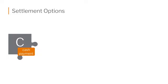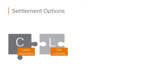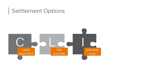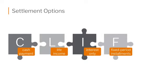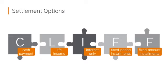An easy way to remember the settlement options is that the first letter of each one spells the word CLIF. C is for cash payment — you take the whole lump sum right up front. L is for life income, similar to an annuity payment; you can't outlive it. I is for interest only — that temporary payout. And the two F's are for fixed period of time and fixed amount. CLIF will help you remember the choices as a beneficiary.